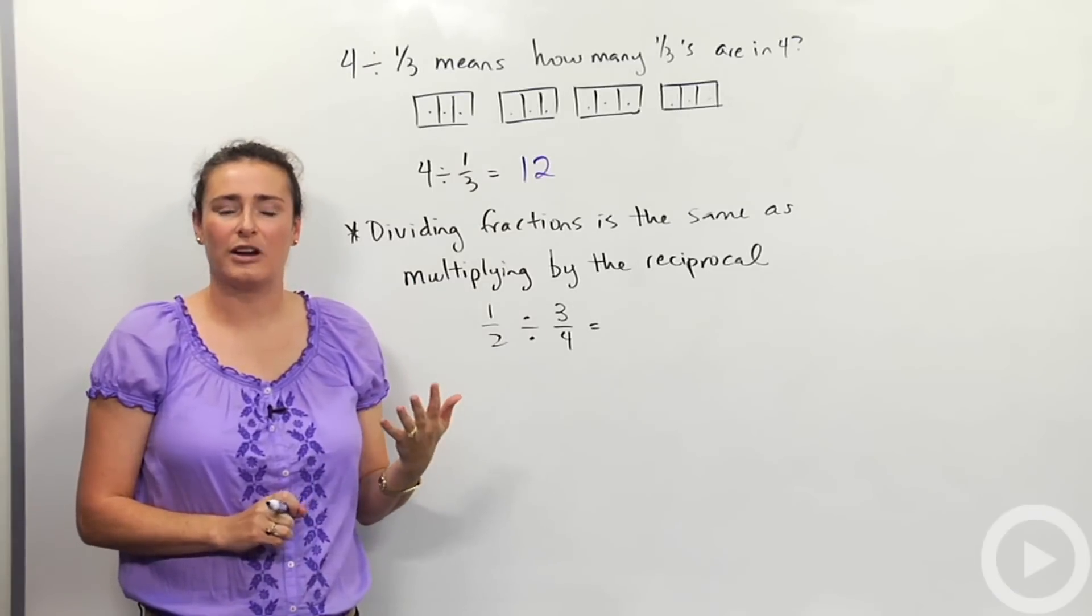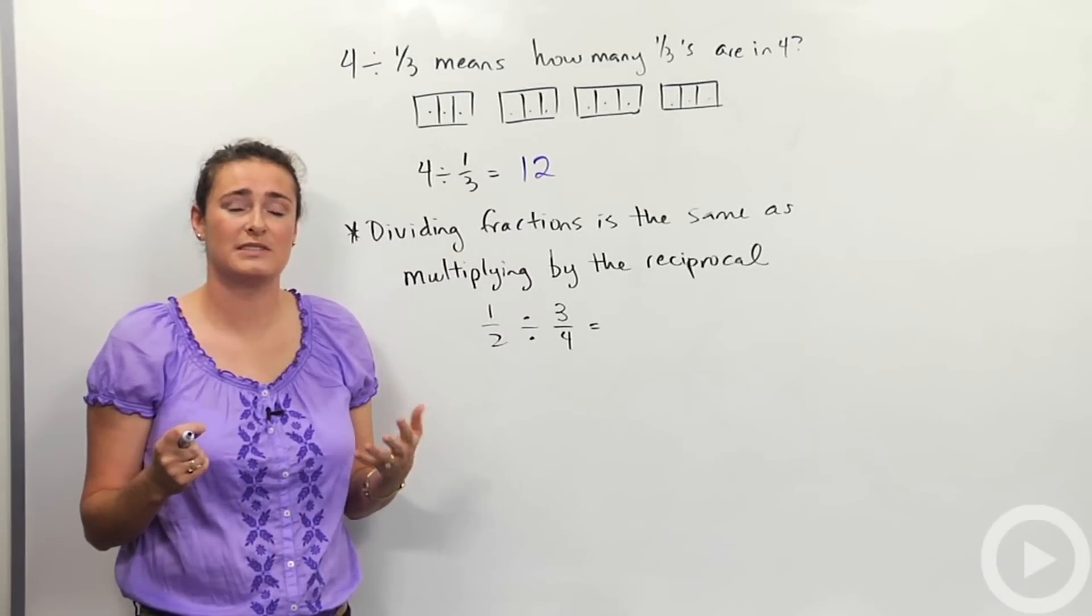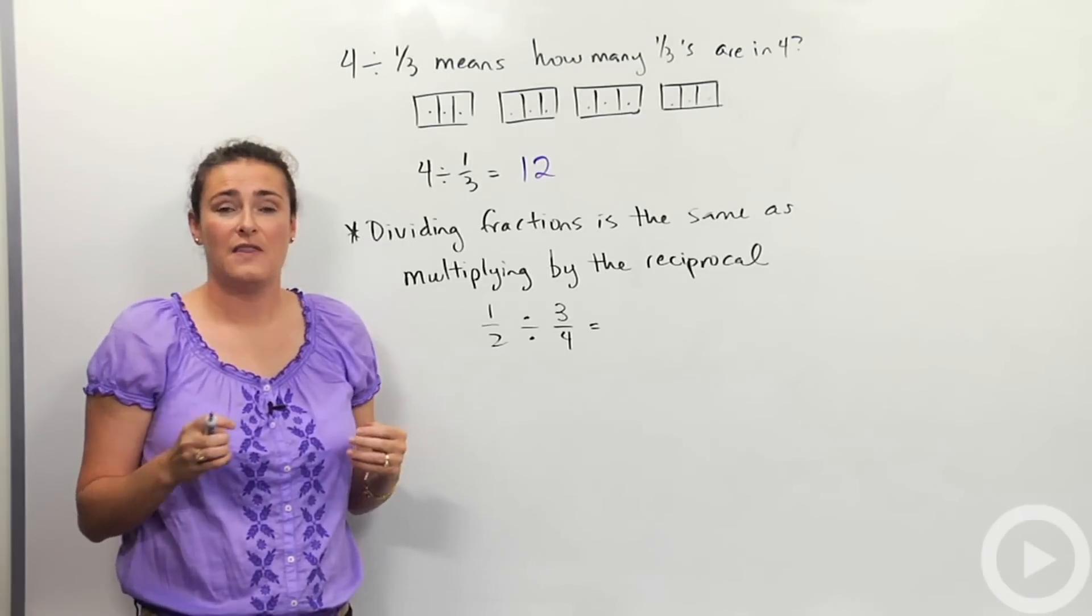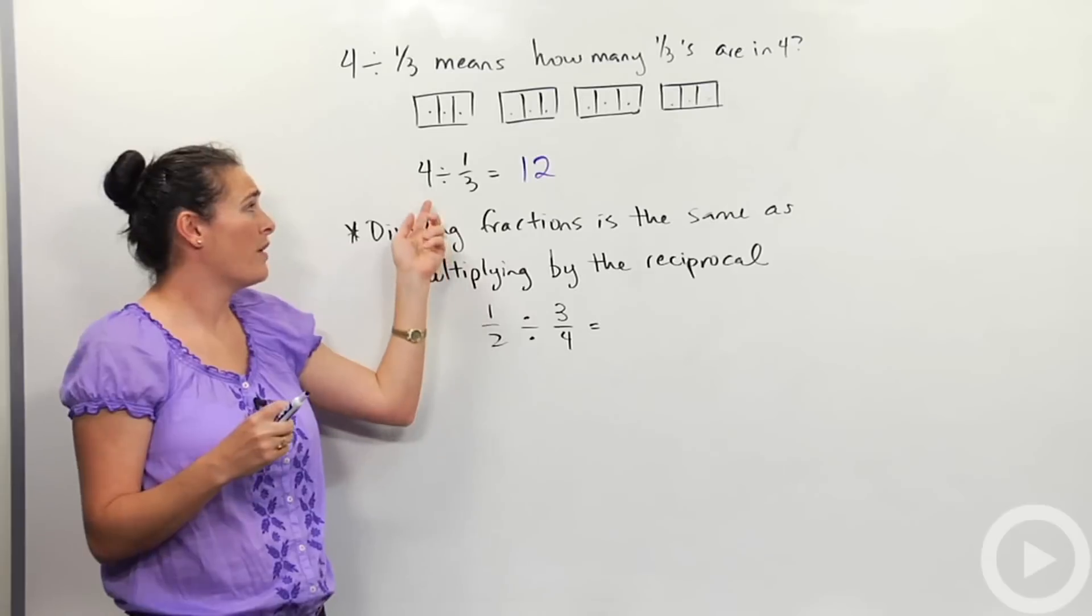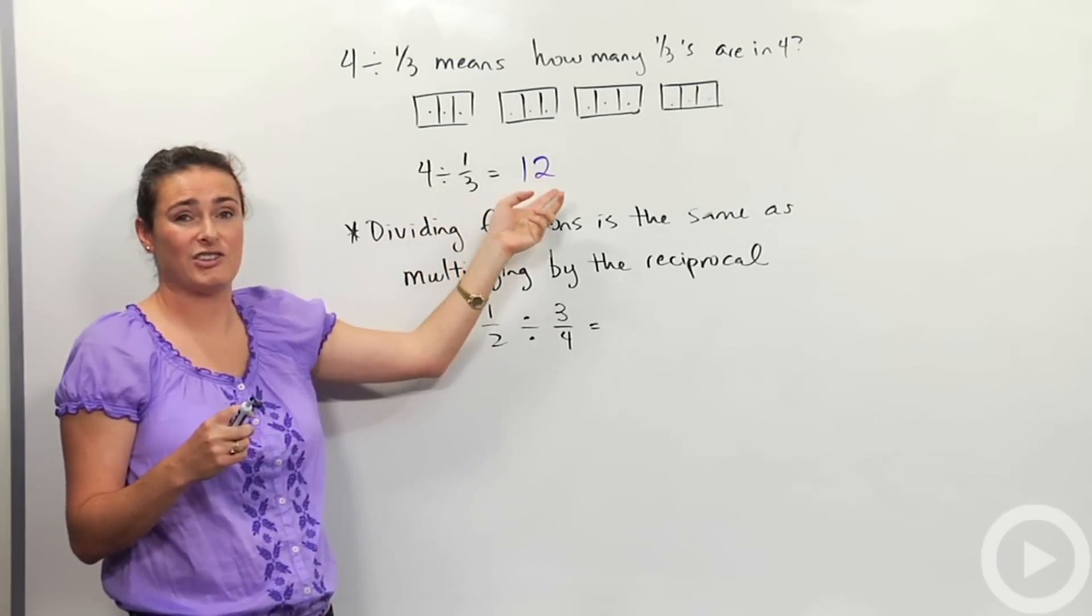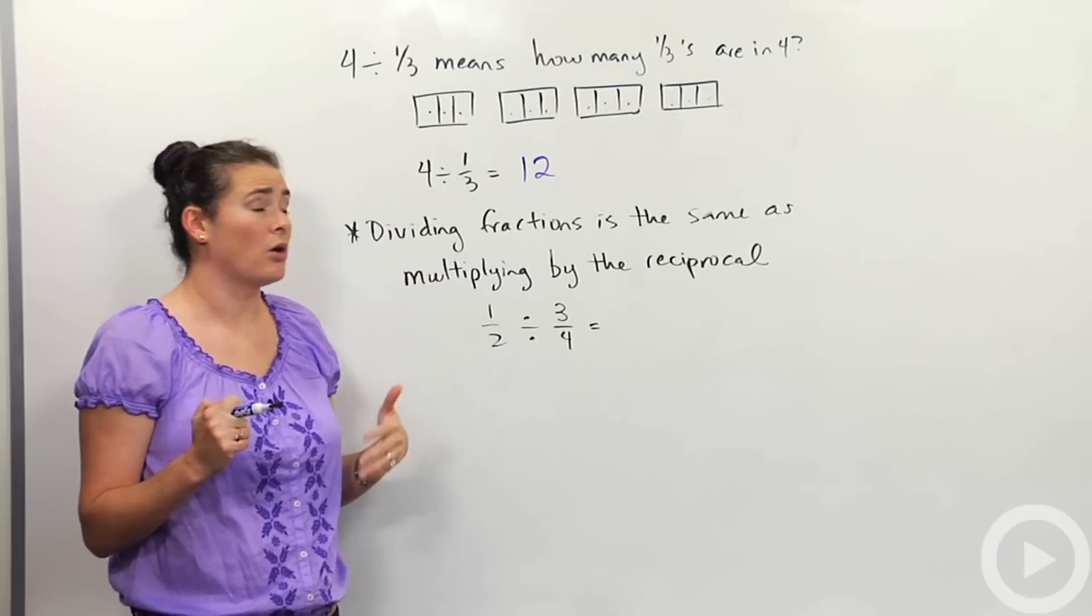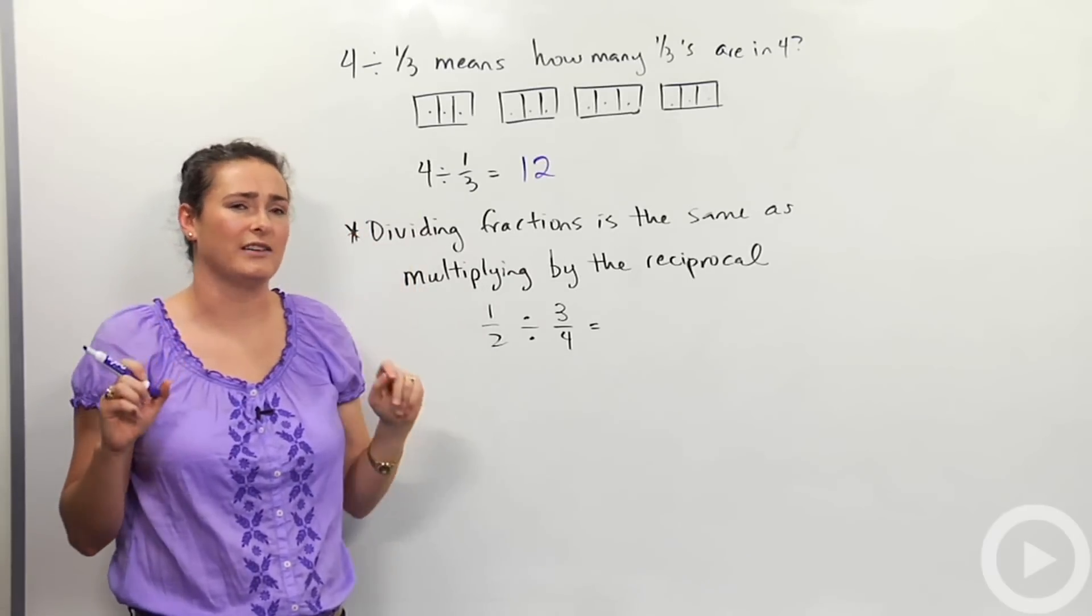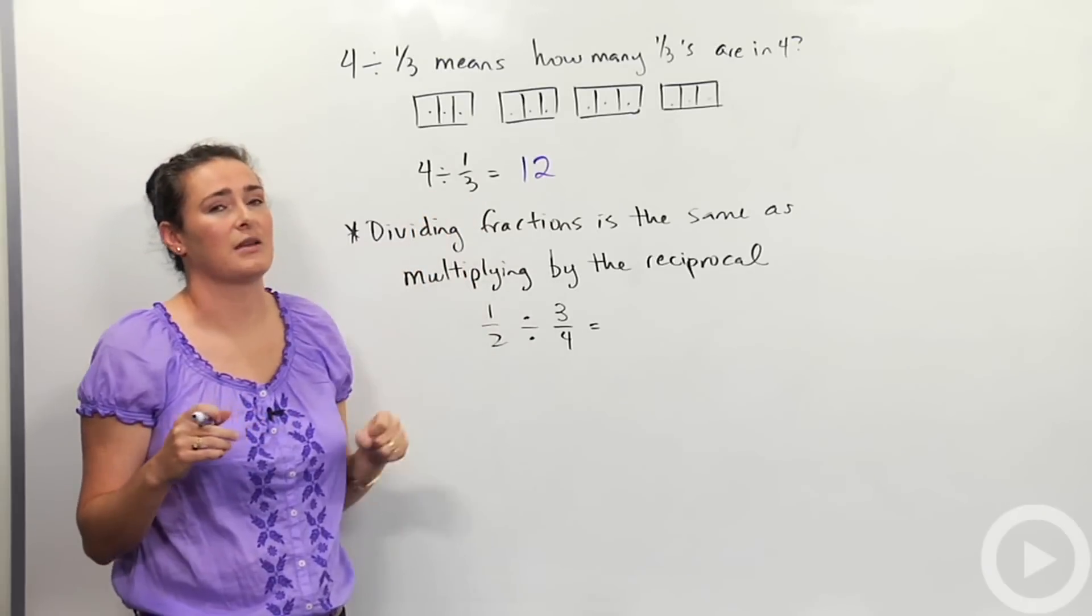And one thing that's kind of weird about this, I personally think, is that almost always when we do division problems, the answer up until now, the quotient, has been a smaller number. Whereas here, when I'm doing four divided by a third, the answer is actually bigger. And that's something that might happen. You could think about why or when. That's some kind of challenge exercise: when is it that the quotient is bigger than the numbers you're dividing by?